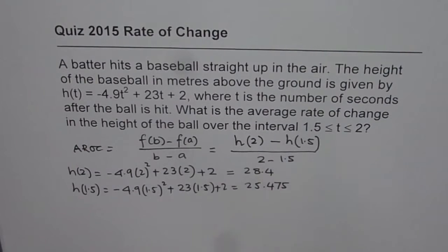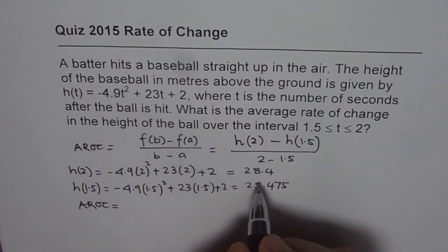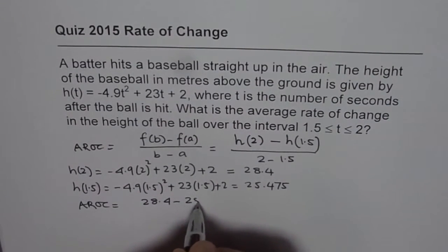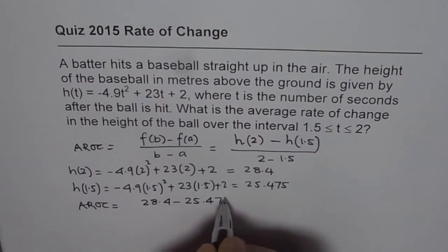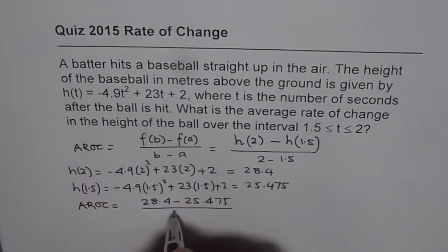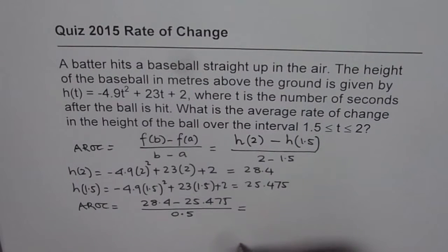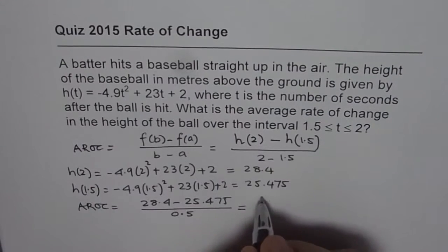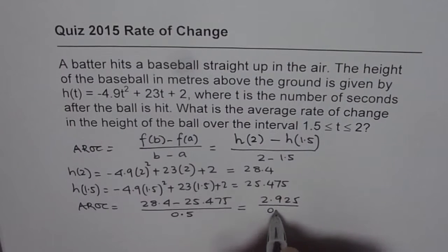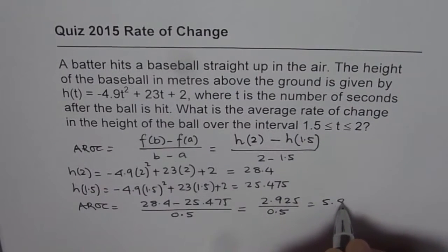Once you substitute these values, you get average rate of change, which is 28.4 minus 25.475 divided by 2 minus 1.5, which is 0.5. When you calculate this answer, you will get approximately 2.925 divided by 0.5, and that gives you 5.85.